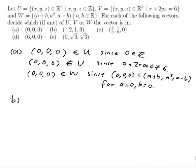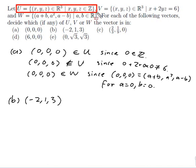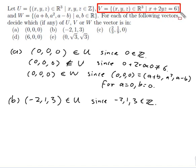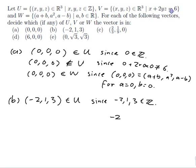Let's try part b: the vector (-2, 1, 3). First let's see if it's in U. Yes it is, because all three coordinates are integers, so that's in U since -2, 1, and 3 are all integers. Is it in V? I'd have to see if they satisfy the equation. So -2 plus 2 times 1 times 3 is equal to -2 plus 6, which is 4, which is not equal to 6. So they don't satisfy the equation, so this point is not in V.